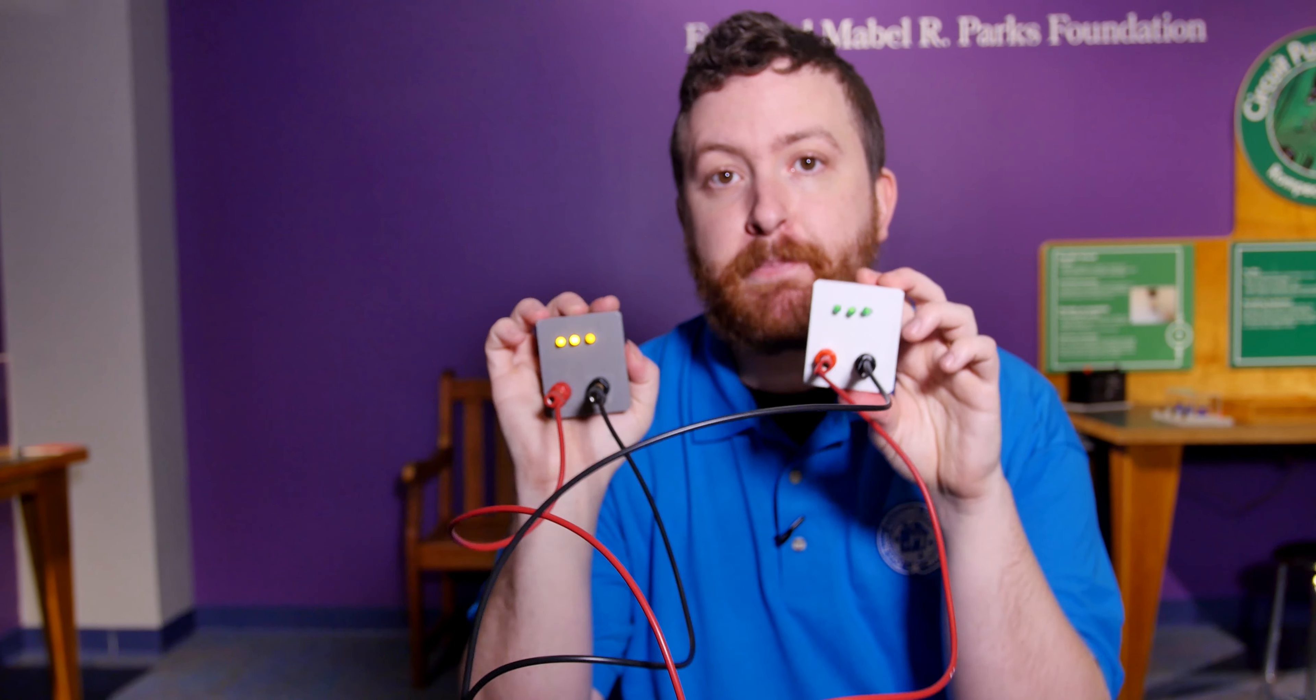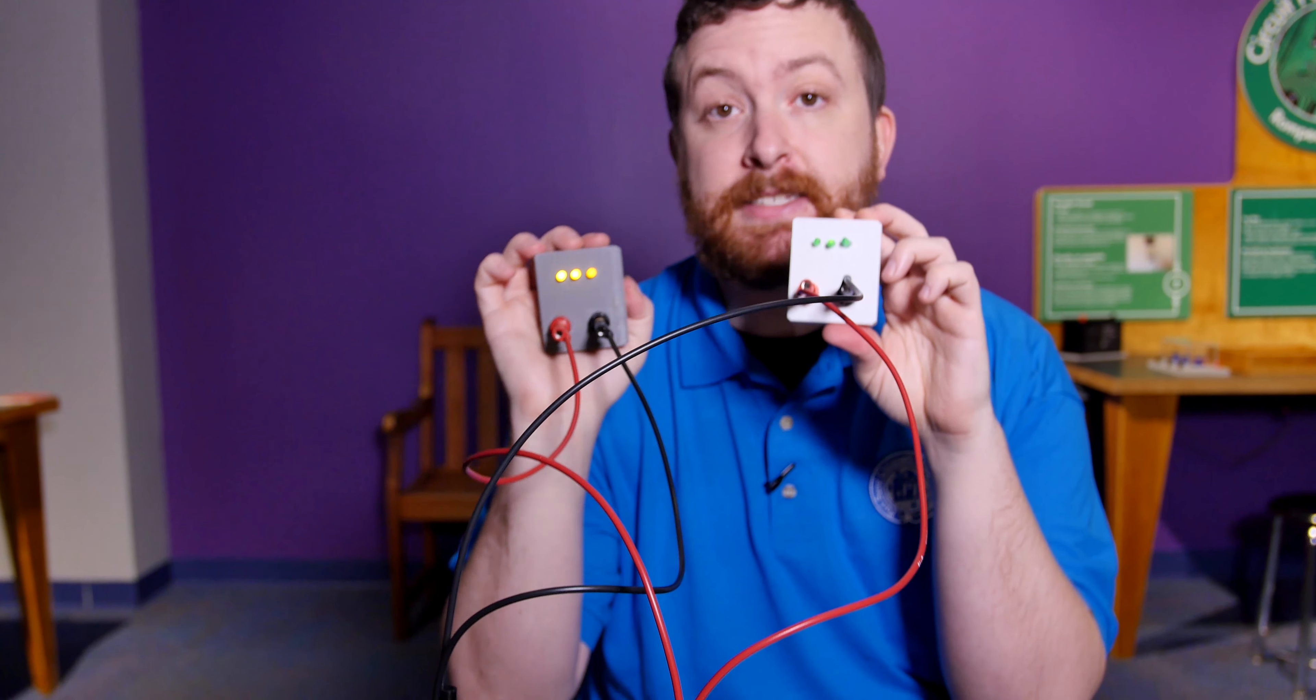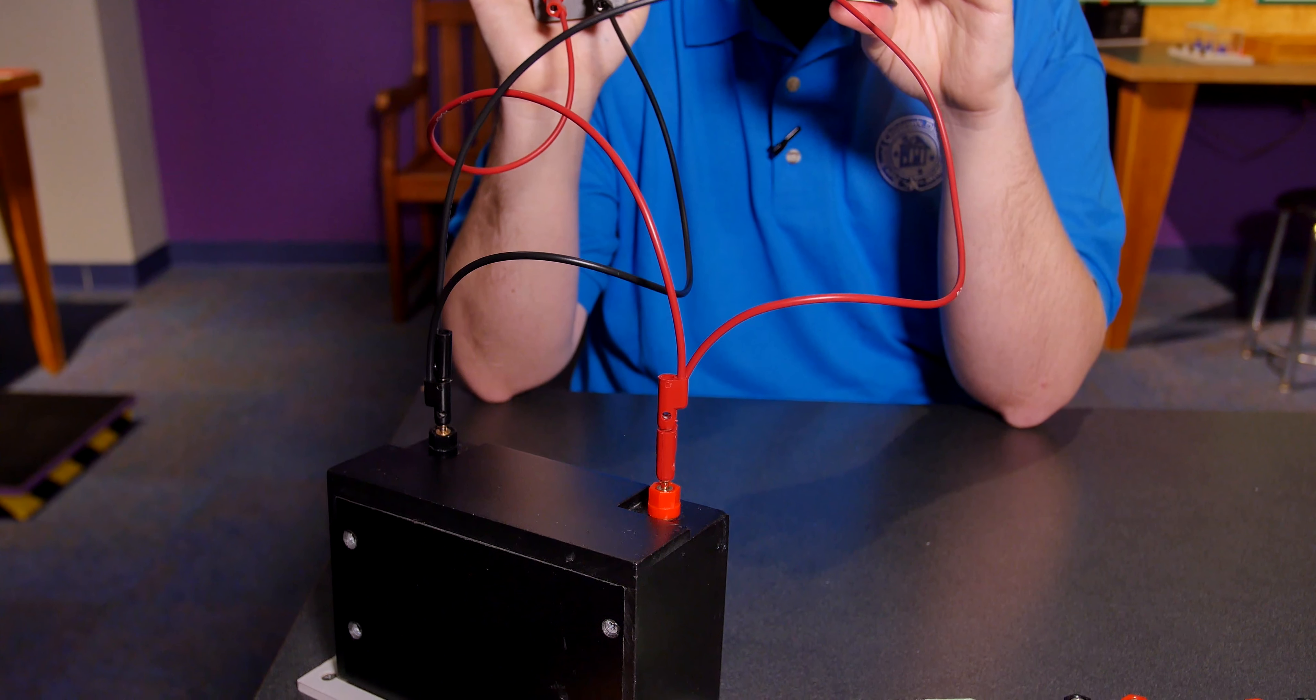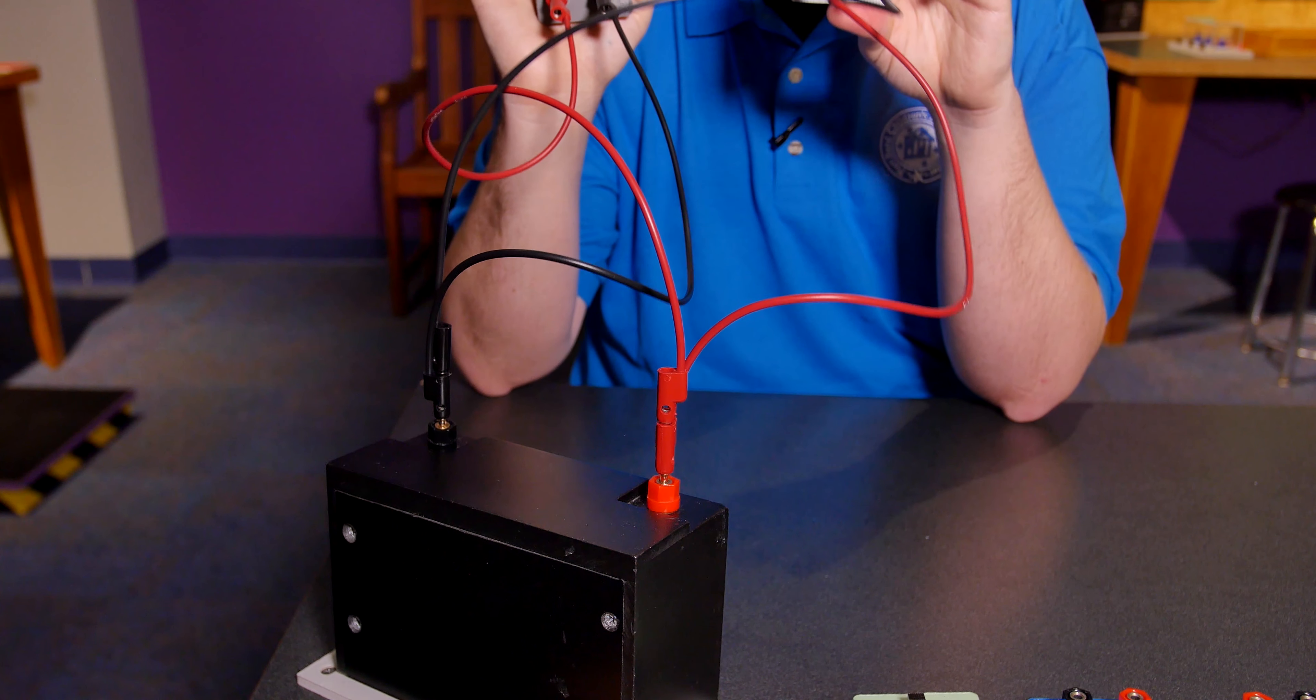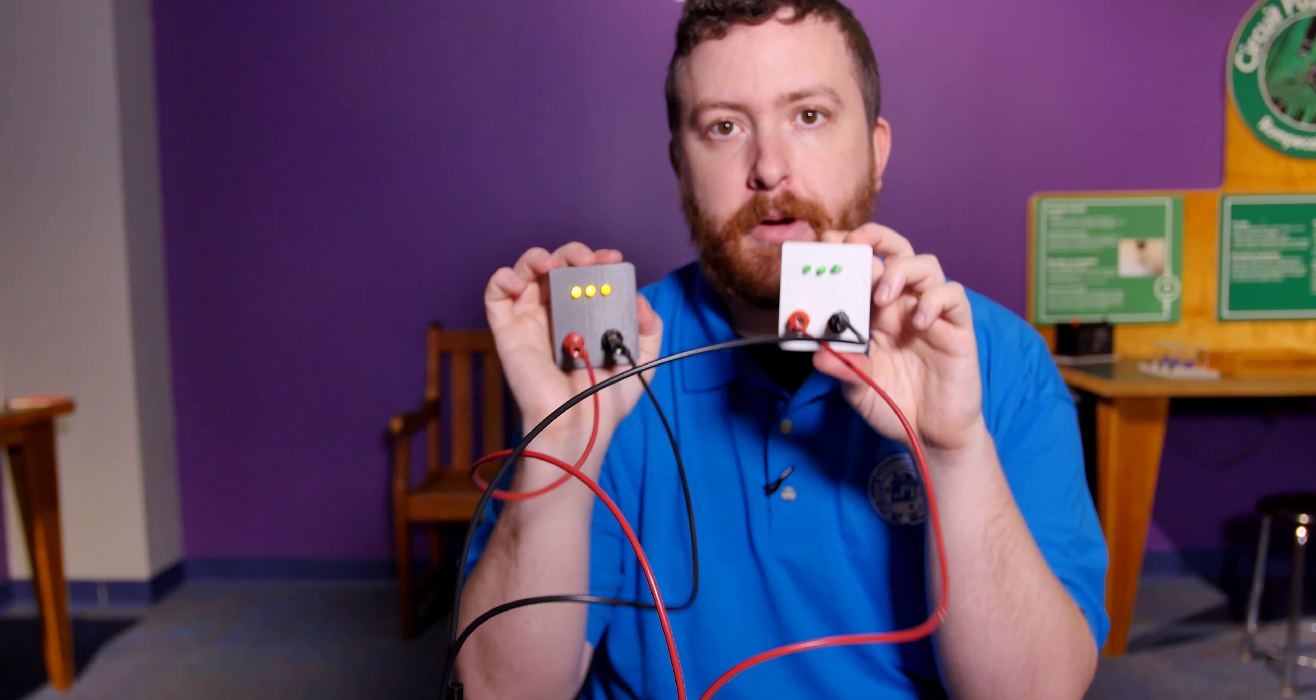So this is two separate circles, separate circuits, and that makes it so that the resistance does not add up and there is enough current coming from the battery, pushed out by the power of the battery, to go through all of the LEDs and light up both circuits.